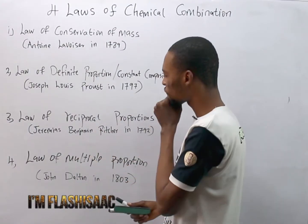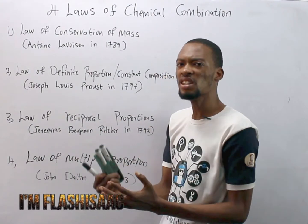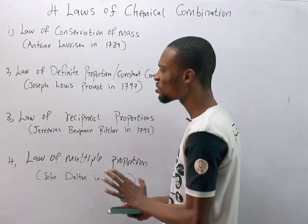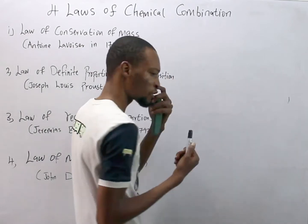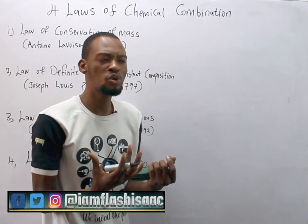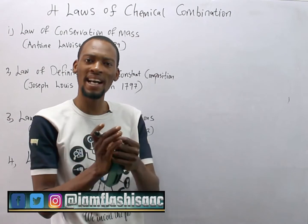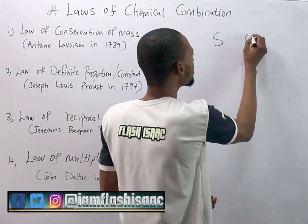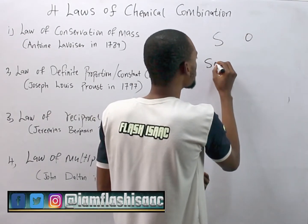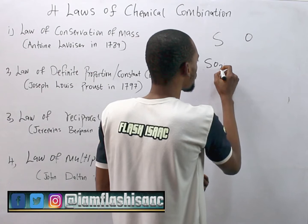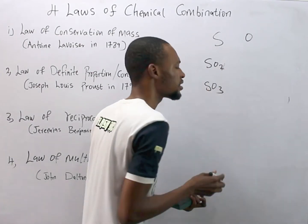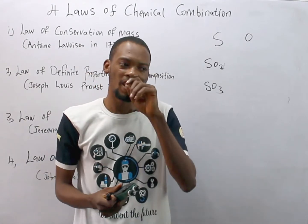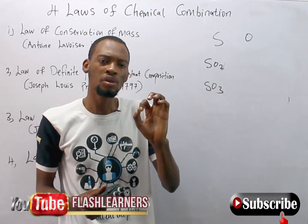The law of multiple proportions was proposed by John Dalton in 1808. It states that if two elements can combine to give more than one compound — for example, sulfur and oxygen can combine to give SO2 and SO3 — the ratios at which they do so are in simple multiple proportions.